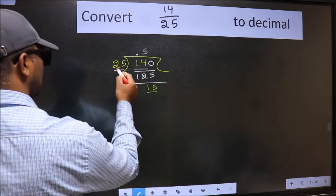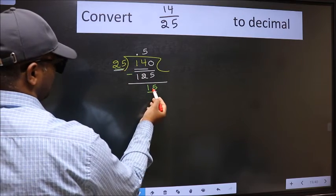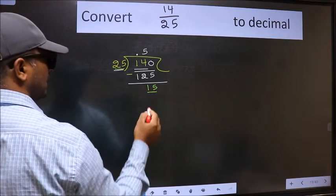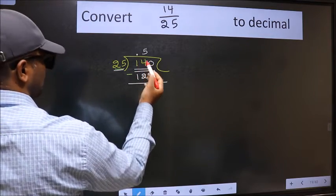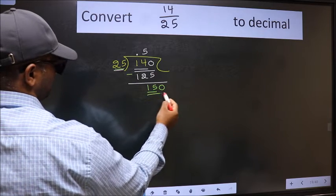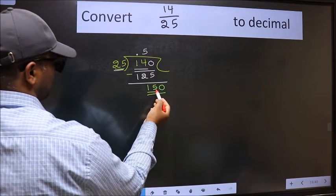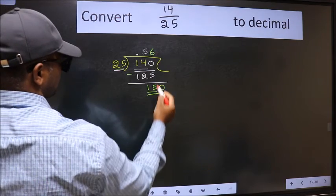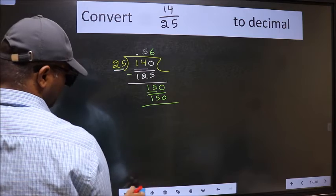Now here we have 15 and here 25. 15 is smaller than 25, and we already have the decimal, so this time we can directly take 0. So 150. When do we get 150 in the 25 table? 25 times 6 equals 150.